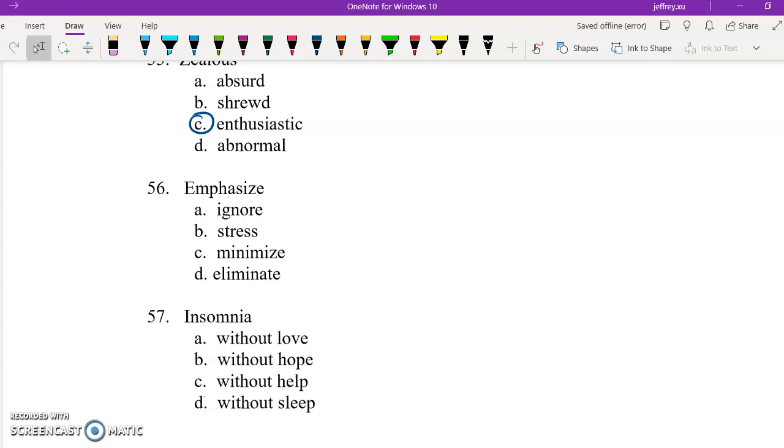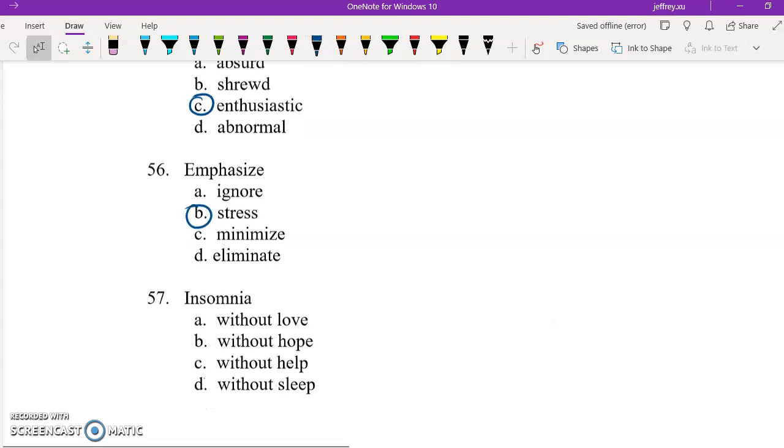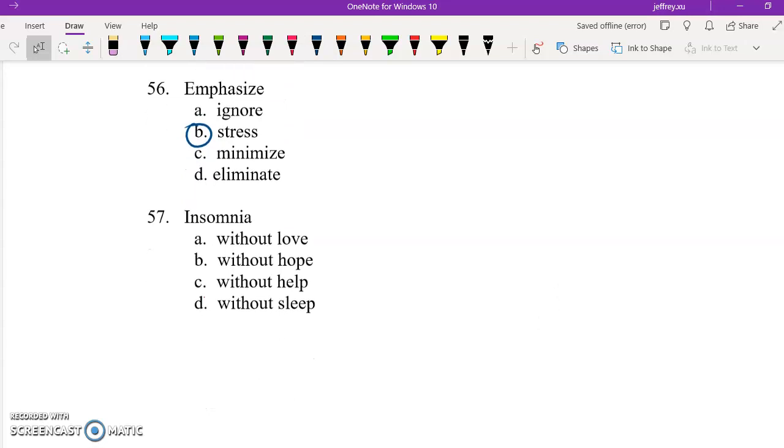56, if you emphasize something, it means you really underscore it or you really highlight it. You really bring it out. So B encapsulates all those different terms that I just mentioned. 57, insomnia. So yeah, this is just one thing that you really have to know. Som, I think, is like a root for sleep. It's like a root chunk of a word for sleep, like somnambulism. You might have encountered this at some time or another. Means sleepwalking. So without sleep is correct.